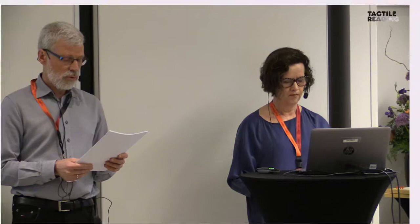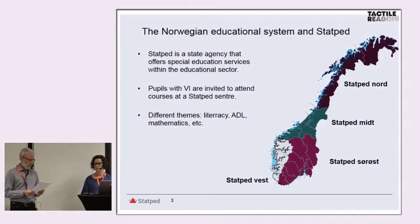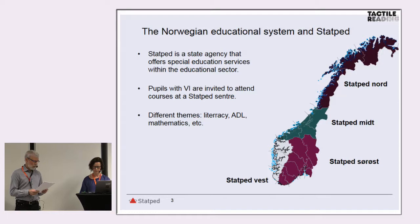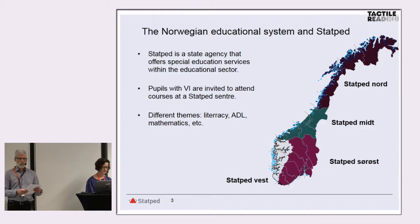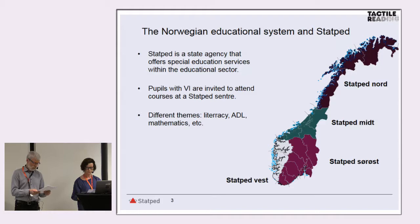The Norwegian educational system directs wholly towards inclusive education and thus there are no special schools for pupils with visual impairments. However, Statped, which is a state agency that offers special education services within the educational sector, invites pupils with visual impairments to attend four-day courses at one of the Statped centers. In our course, we had seven hours of orientation and mobility in connection with mathematics.